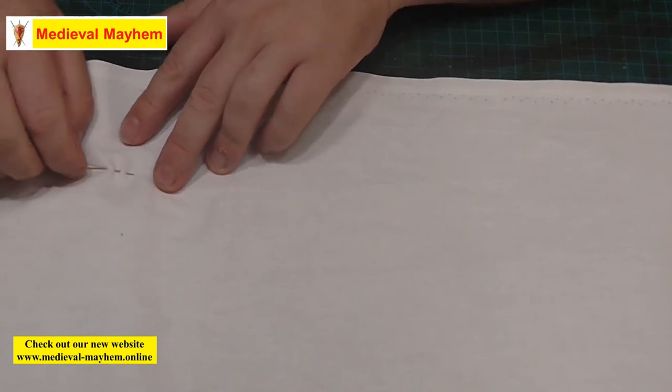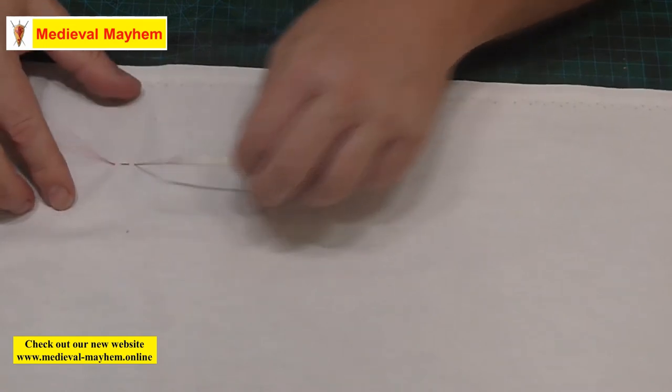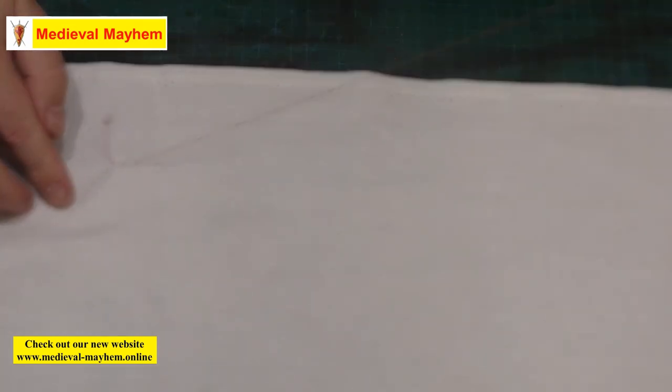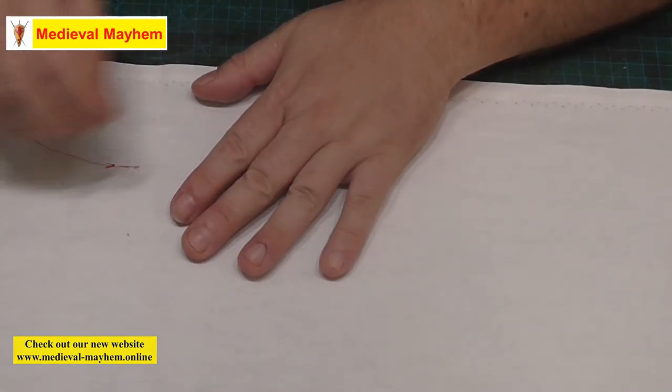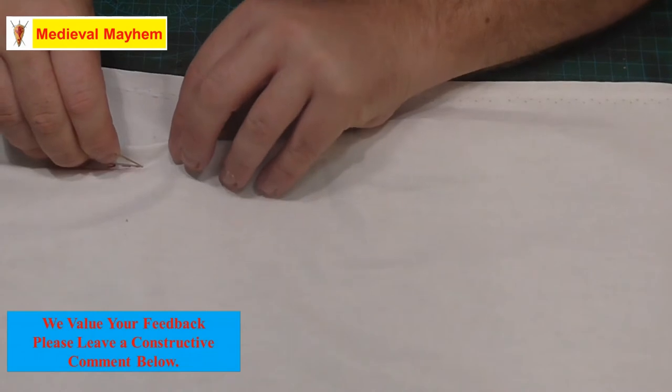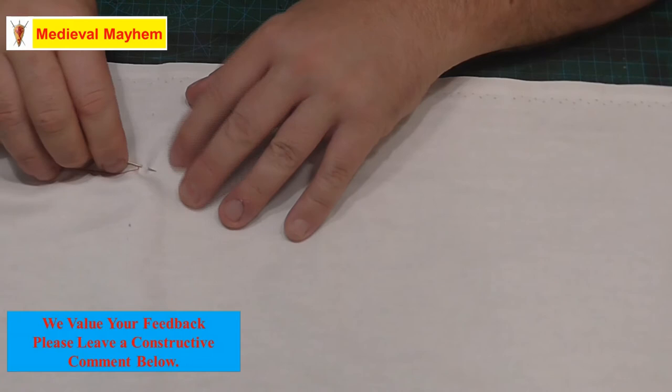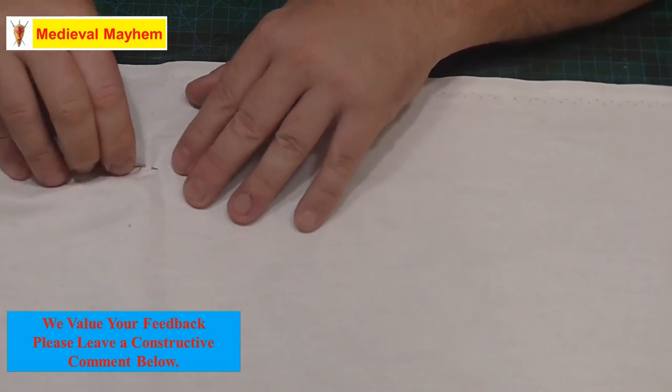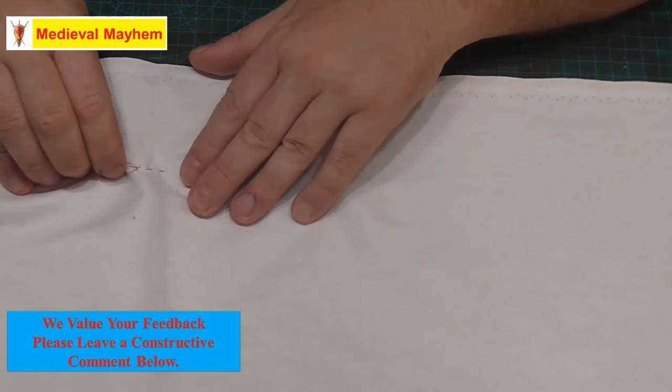I'm going to leave a link in the description below and we're going to talk about some of the historical background of this particular stitch and the fact that it's been seen, it's been found in extant garments that have been found by archaeologists. Now historically a stitch length of around about six millimeters or one quarter of an inch is about accurate. The main thing here is just to keep your stitch length consistent.